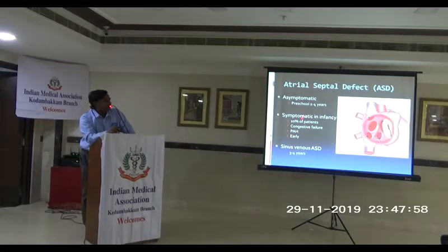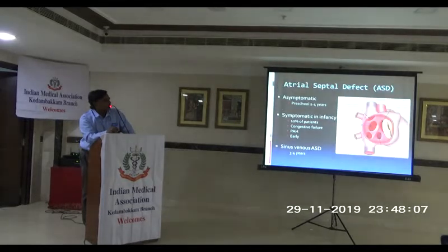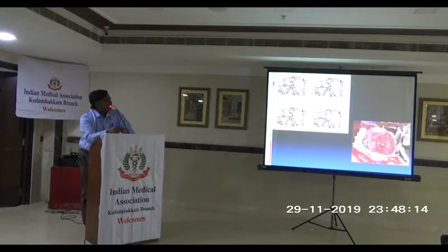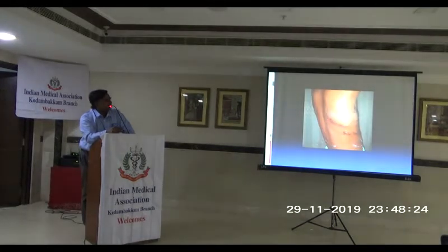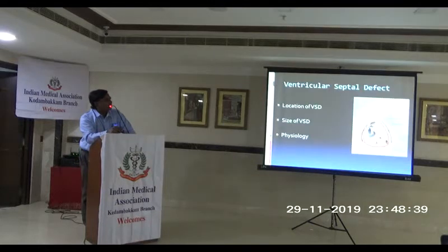Sinus venosus ASD — the commonest way it is done is to put in a device. Secundum ASDs are quite amenable to a device because it sits like a button. The other types of ASDs are usually surgical. Very infrequently we have extracted devices because a previously placed device started eroding. We do quite a few minimally invasive ASDs — there is a 5.5 cm incision below the right scapula, and the child probably never gets to see the incision.